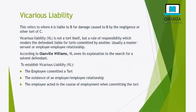To establish Vicarious Liability, three things are essential: one, the employee committed a tort; two, the existence of an employer-employee relationship; and three, that the employee acted in the course of his employment when committing the tort. Each of these elements needs to be proven every time in order to establish that an employer is vicariously liable for the tort committed by the employee.